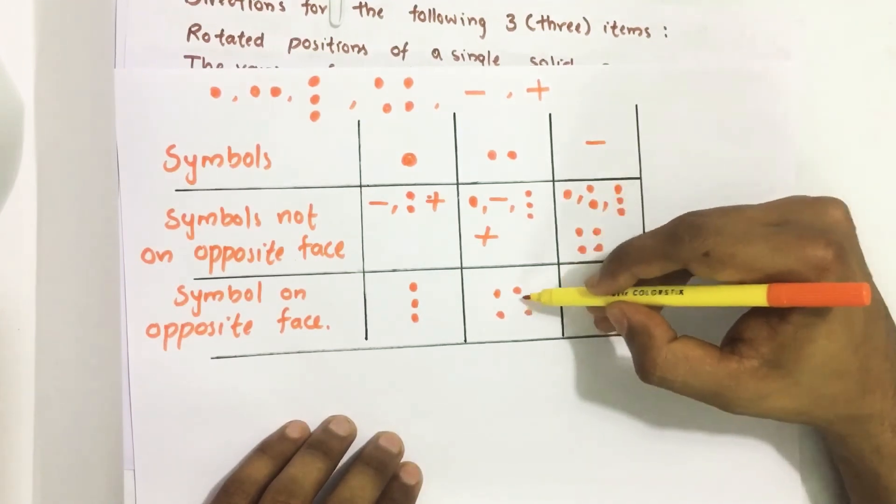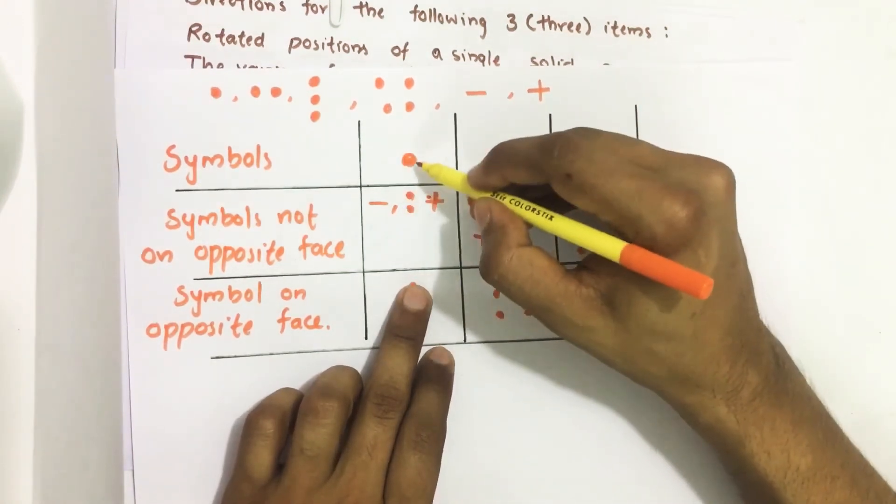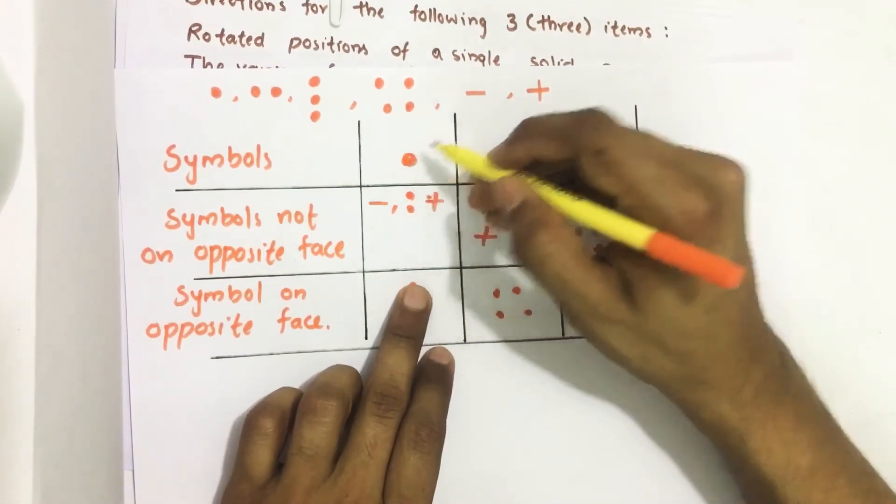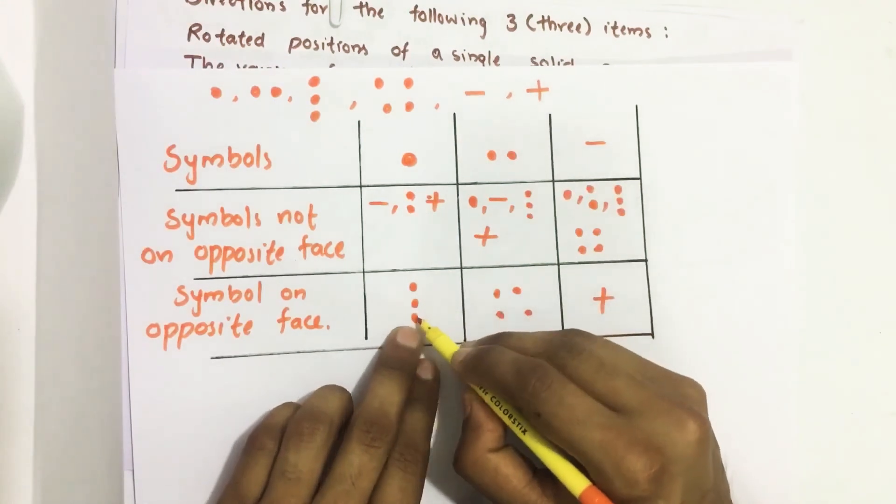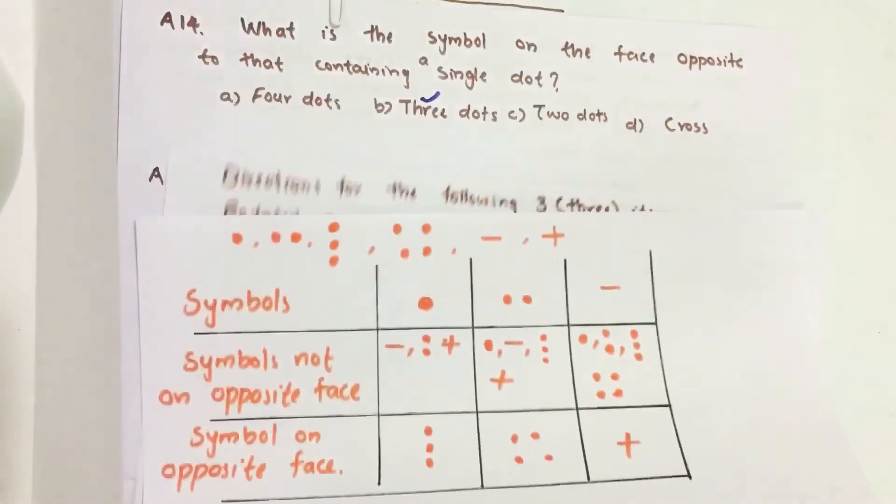Opposite to four dot it is double dot. Then finally remaining is what is on the opposite side of single dot. So it might be triple dot. Now let us answer the questions.